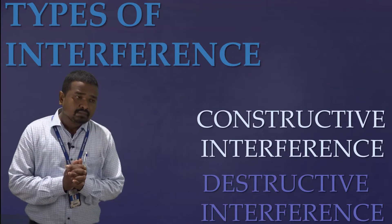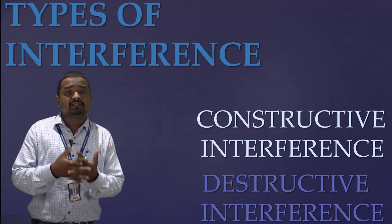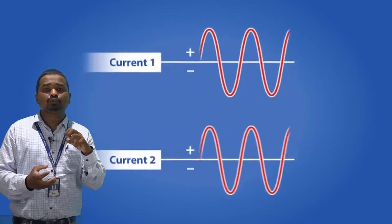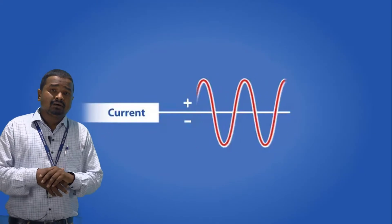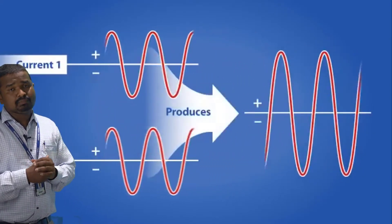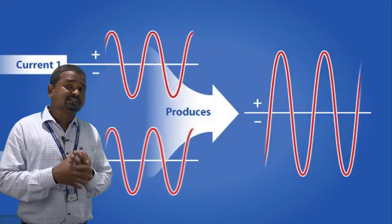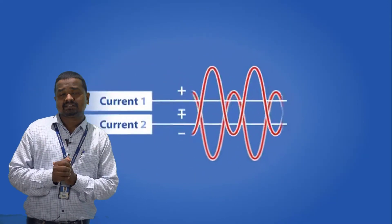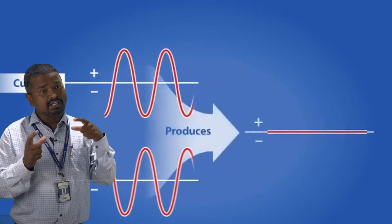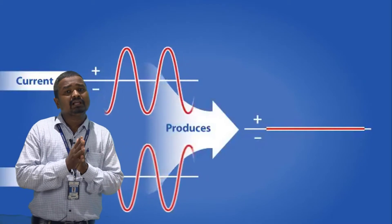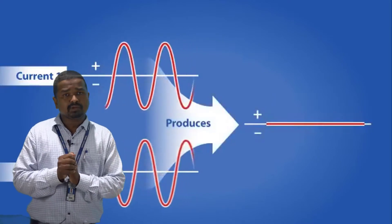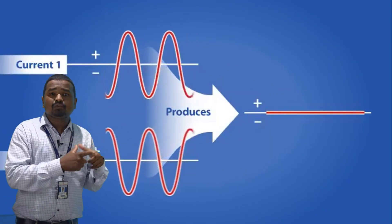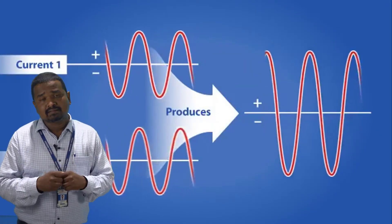There are two types of interference: constructive interference and destructive interference. In constructive interference, the crest of one wave is superimposed over the crest of another wave, or the trough of one wave is superimposed over the trough of another wave. We get a resultant wave whose amplitude is the sum of the two individual amplitudes — so intensity increases. In destructive interference, the intensity of light decreases. If the amplitudes of two waves are equal and they meet out of phase, the resultant is zero intensity, because the crest of one wave is superimposed over the trough of another. When waves are out of phase, we get destructive interference; when waves are in phase, we get constructive interference.